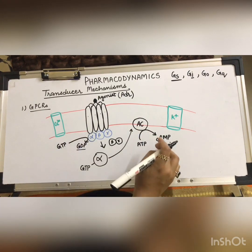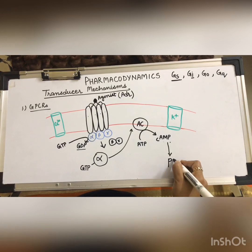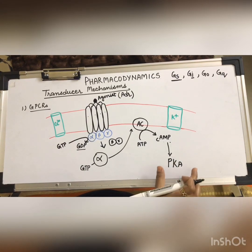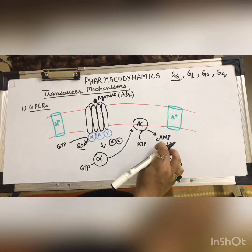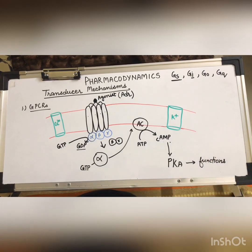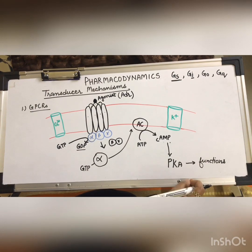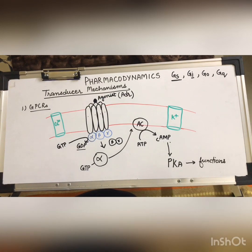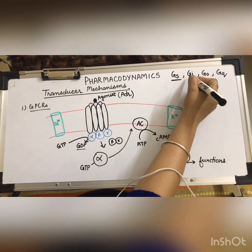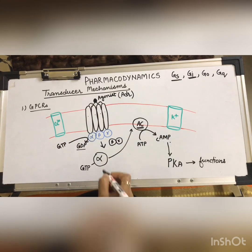Cyclic AMP is our second messenger. It directly stimulates calcium channels and functions through cyclic AMP-dependent protein kinase A. Protein kinase A, when activated by cyclic AMP, alters the functions of certain enzymes, ion channels, and carrier proteins, producing responses like increased contractility, impulse generation, glycogenolysis, lipolysis, etc.